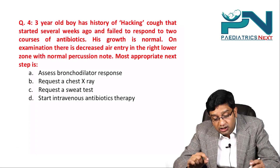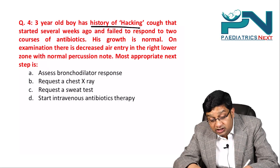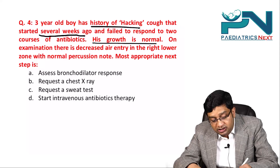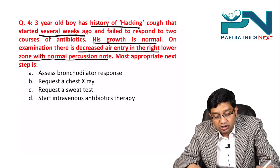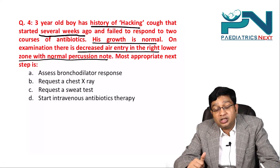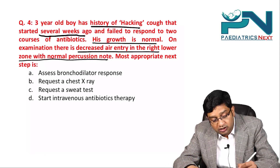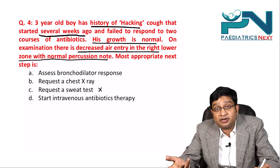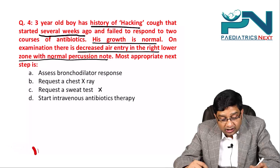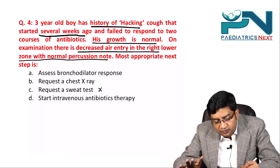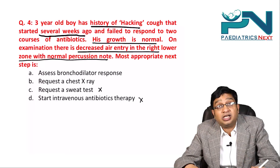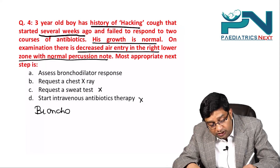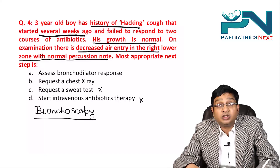Question 4: A 3-year-old boy has a history of hacking cough that started several weeks ago and failed to respond to two courses of antibiotics. Growth is normal. Examination shows decreased air entry in the right lower zone with a normal percussion note. Growth being normal rules out cystic fibrosis, as cystic fibrosis causes growth impairment.